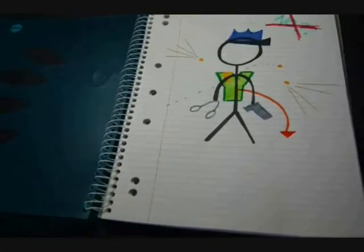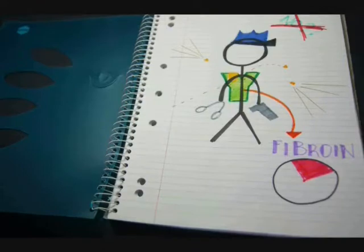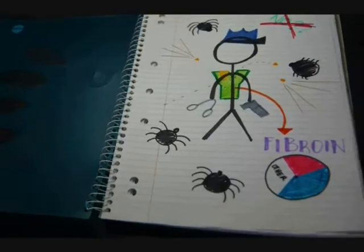Policemen wear bulletproof jackets which consist of a biopolymer called fibroid which is made up of 25% alanine and 42% of glycine that is produced by spiders. That's right, spiders! Think spiders are strong?